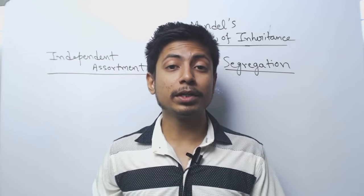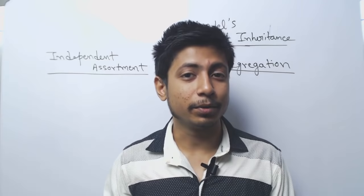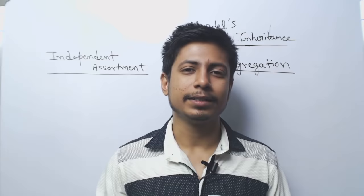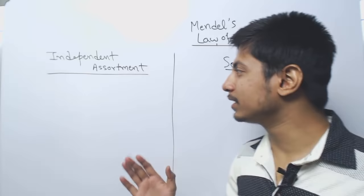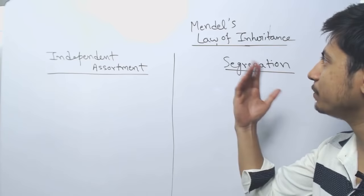Welcome back friends. Welcome to another video lecture from Shomu's Biology. In this video tutorial, we will be talking about the difference between two different laws of Gregor Mendel: the law of segregation and the law of independent assortment. These two are the building blocks of the idea that we know today about inheritance, known as Mendel's law of inheritance.